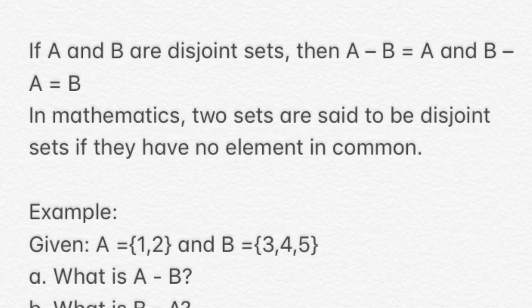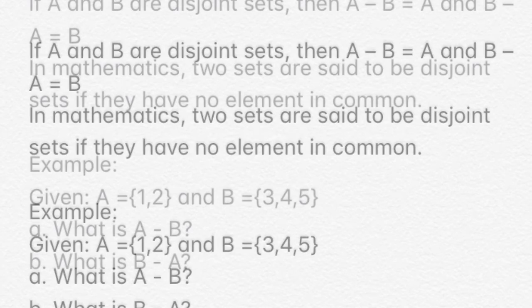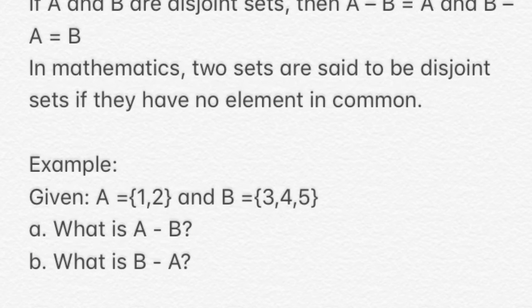Now, if A and B are disjoint sets, then A minus B is equal to A and B minus A is equal to B. In mathematics, two sets are said to be disjoint sets if they have no element in common. For example, set A contains elements 1 and 2, and set B contains elements 3, 4, and 5. Upon looking at the elements of both sets, we can say there are no common elements.